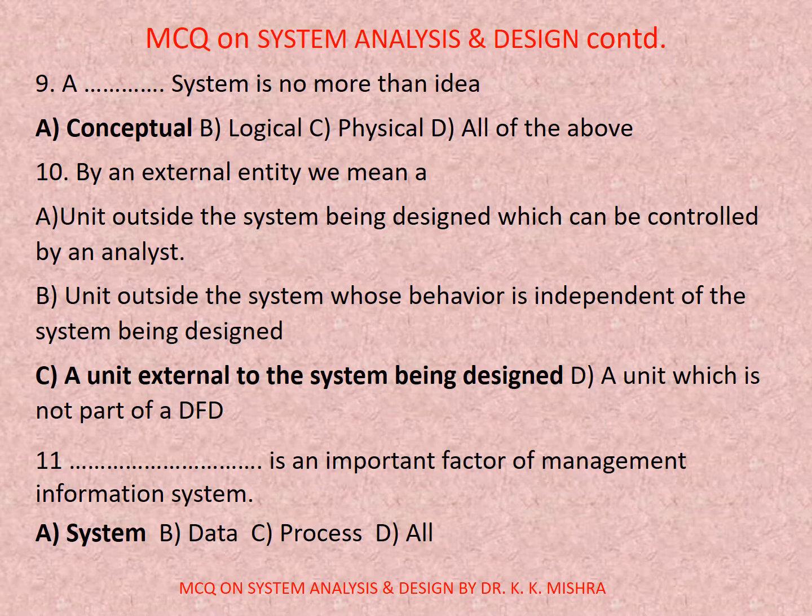Question number nine: A ideal system is no more than an idea. Options are: a) conceptual, b) logical, c) physical, d) all of the above. Correct option is a) conceptual. Question number ten: By an external entity we mean a unit outside the system being...